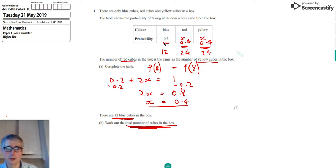So to get the total number of cubes that are in the box, all we need to do is add those up. 12 plus 24 plus 24. So that will be 60.